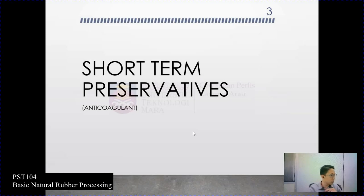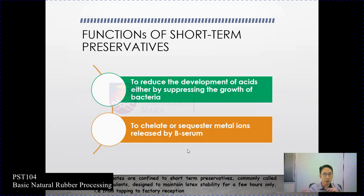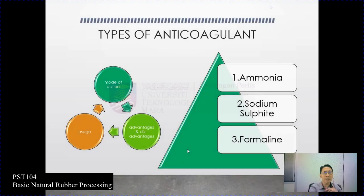Short-term preservative is also known as anticoagulant. The function of short-term preservative is basically twofold: first, to reduce the development of acid either by suppressing the growth of bacteria, or to chelate or sequester metal ions released by the serum. The short-term preservative, commonly called anticoagulant, is designed to maintain latex stability for a few hours only — from tapping to factory reception — to retain the collected latex during transportation and storage before it reaches the factory.